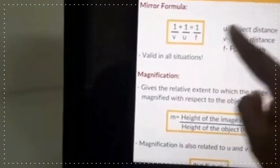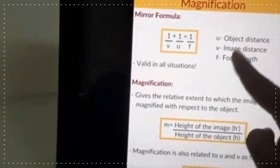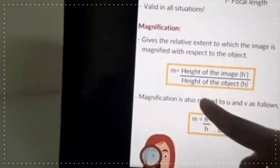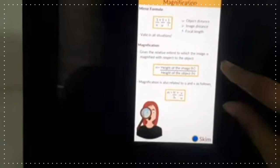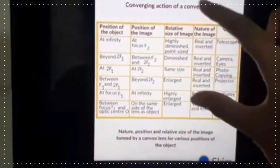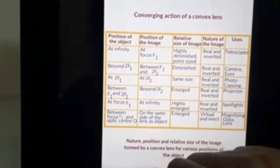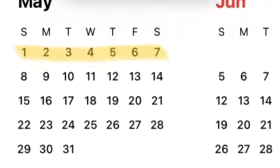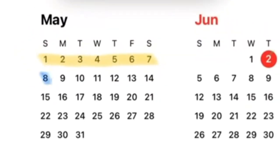Today I decided to learn the Physics chapter — our first chapter, Light: Reflection and Refraction. I just did a revision of all the concepts using Skim and it's really useful. The link will be in the description box below through which you can get into Skim. So let's get back into the video.